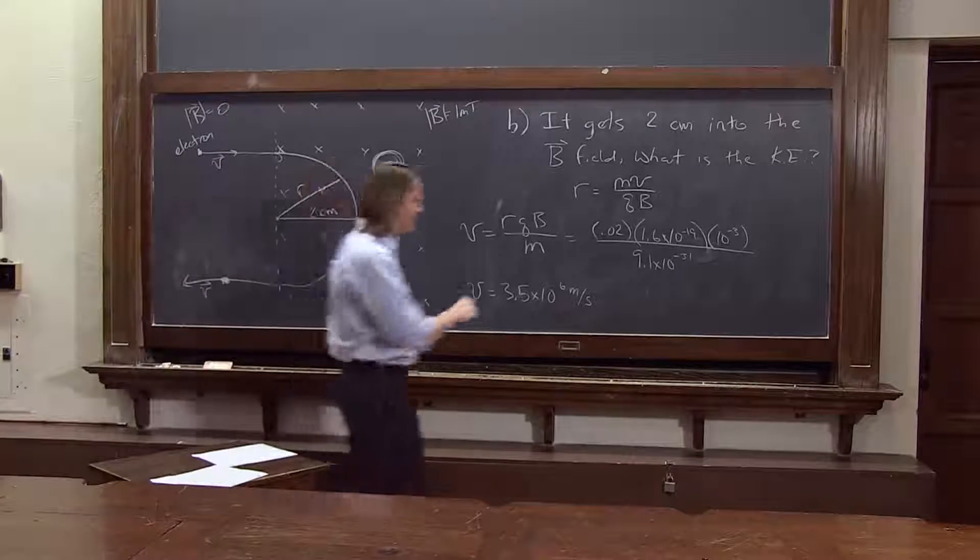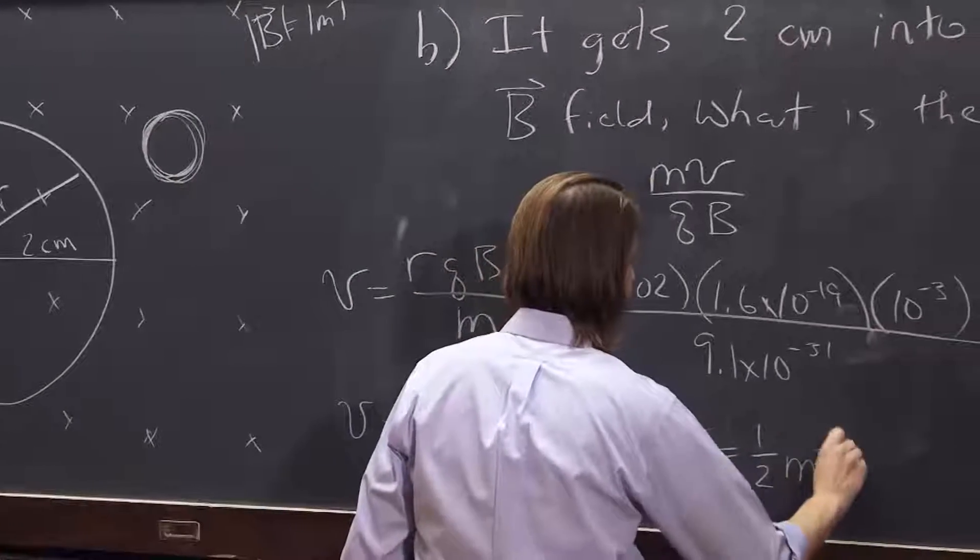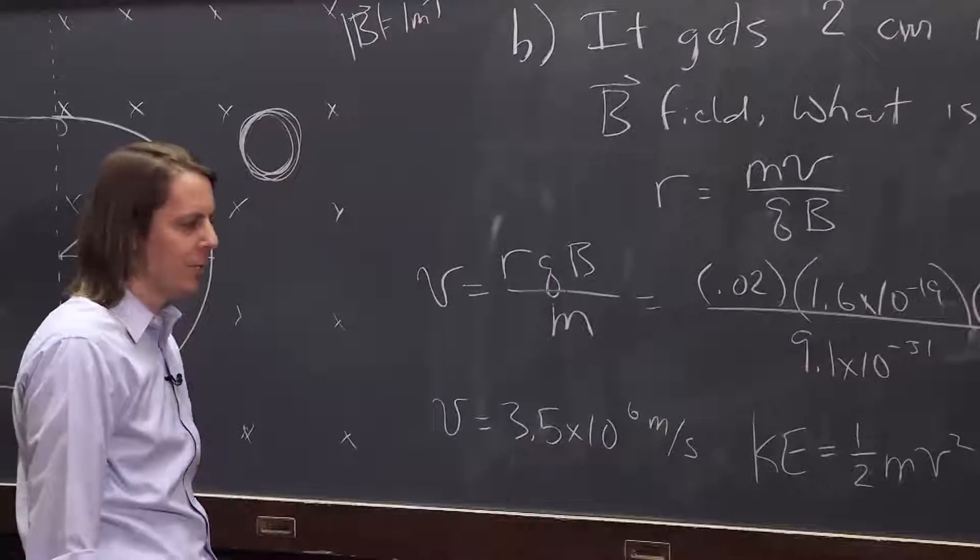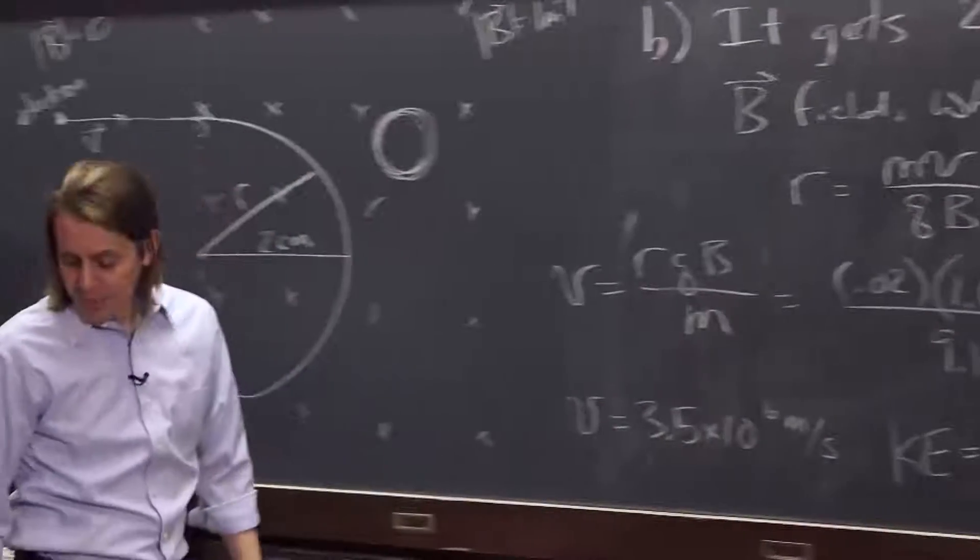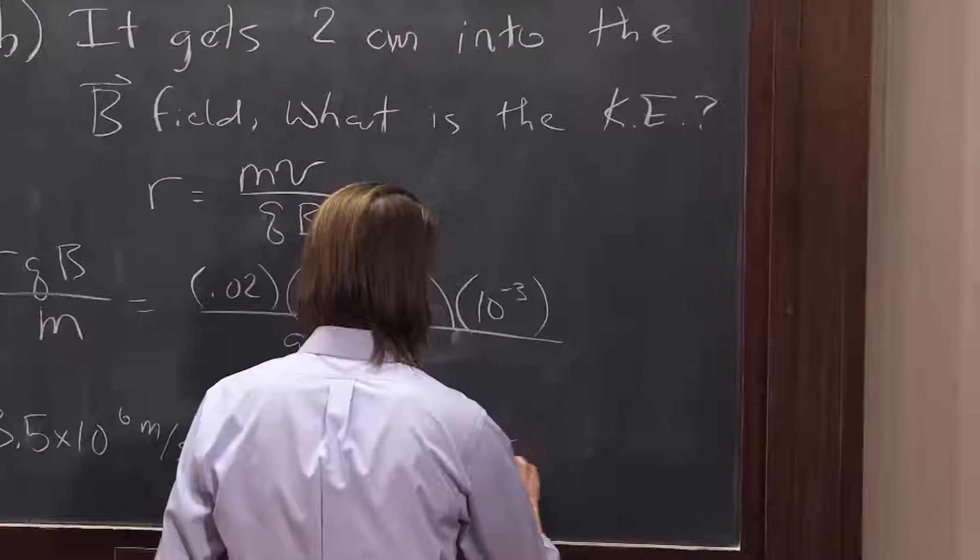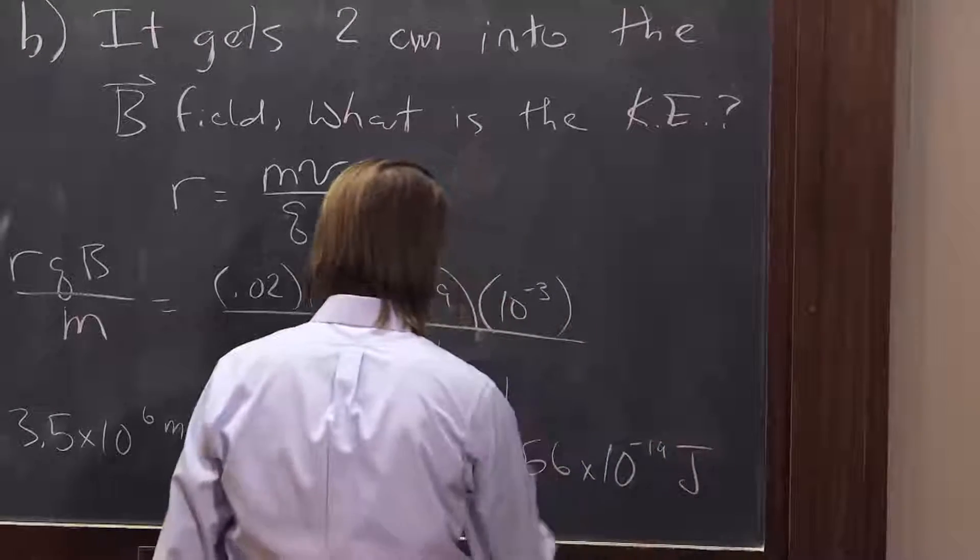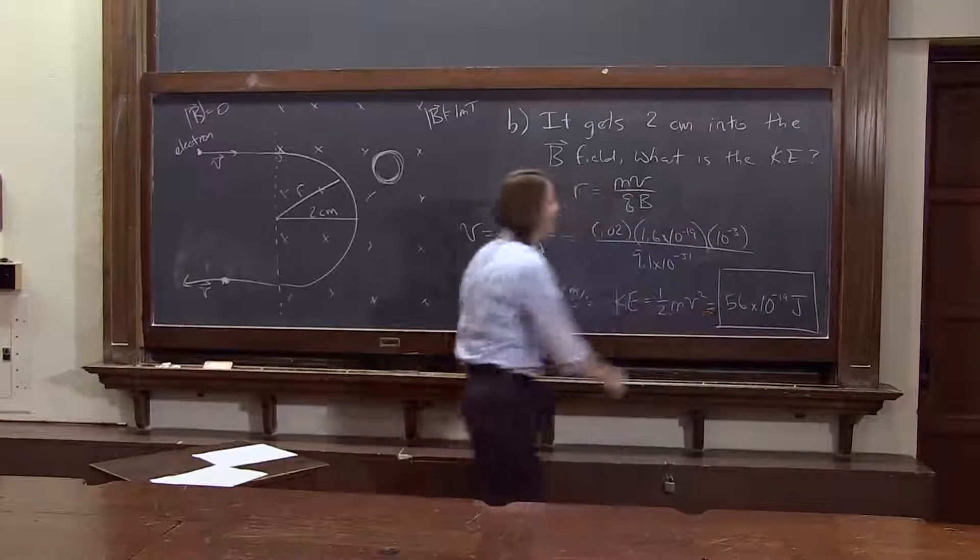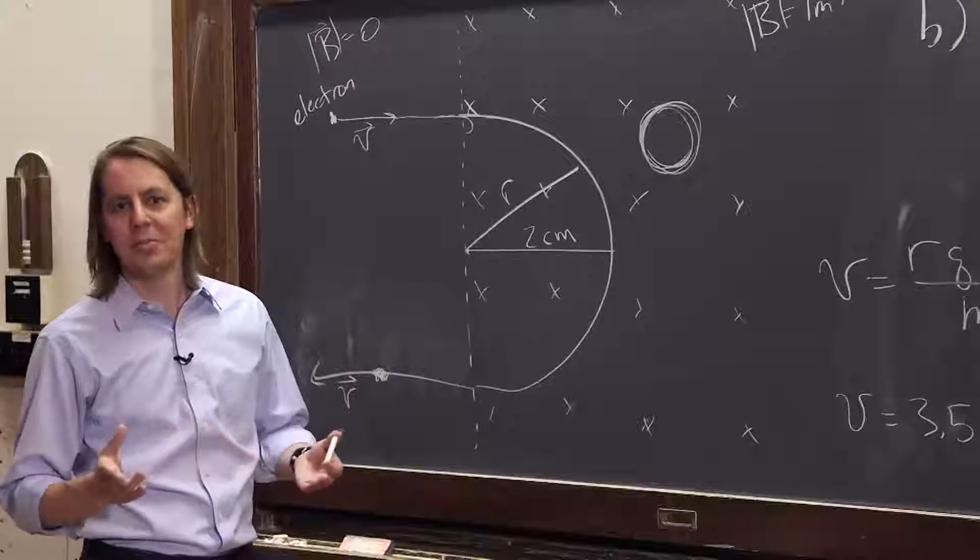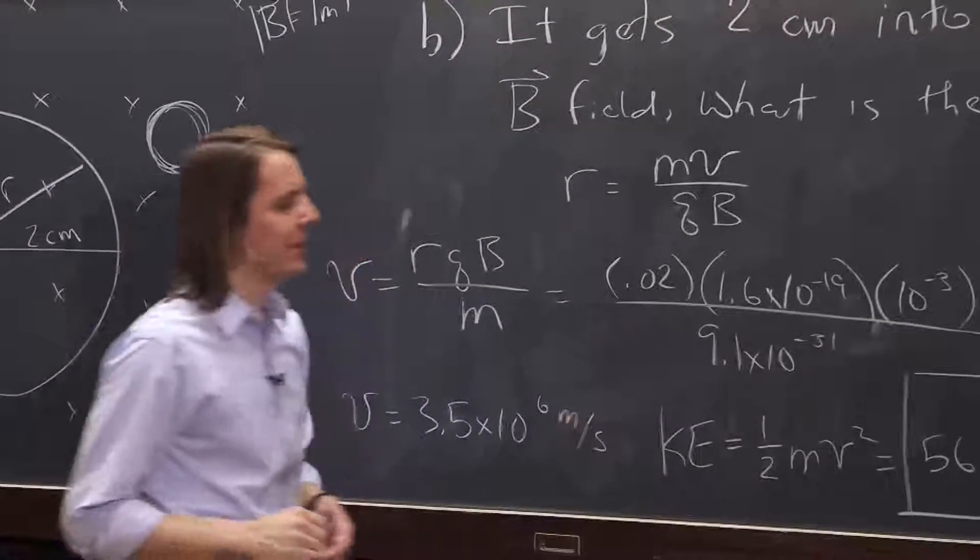So now you plug this into KE, just your standard formula for one-half mv squared, where m again is 9.1 times 10 to the minus 31 kilograms. V is 3.5 times 10 to the 6 meters per second. And you get 56 times 10 to the minus 19 joules. An extremely small amount of kinetic energy, but keep in mind, it's just an electron. It doesn't weigh much. So even though it's going fast, this extremely small mass keeps the kinetic energy really low.